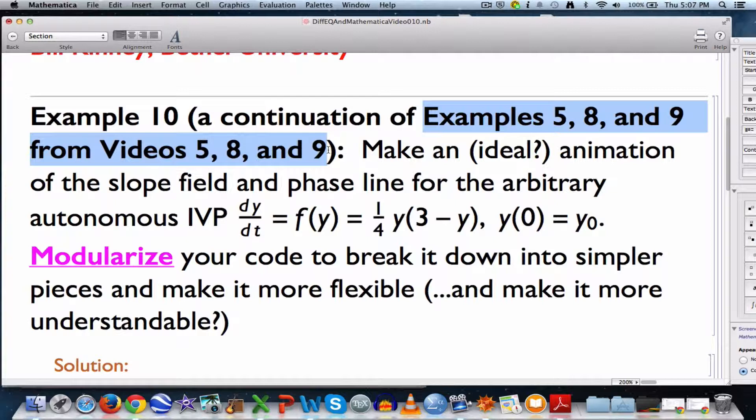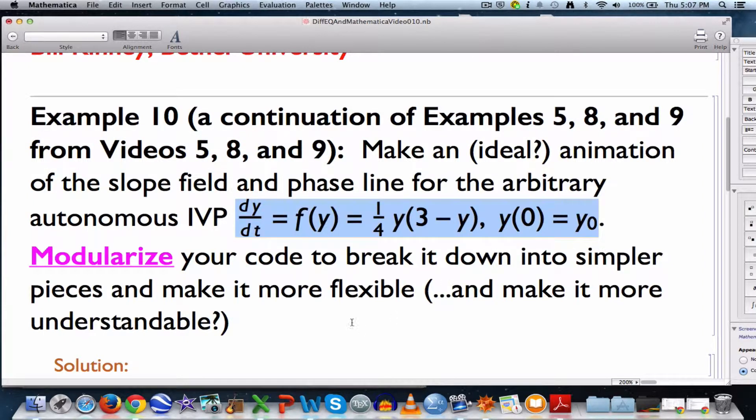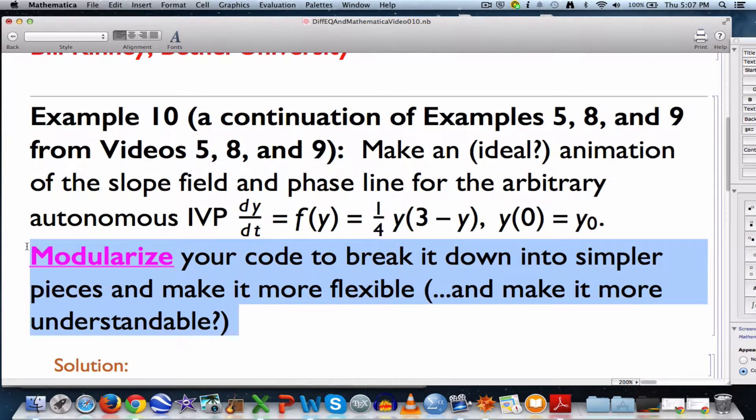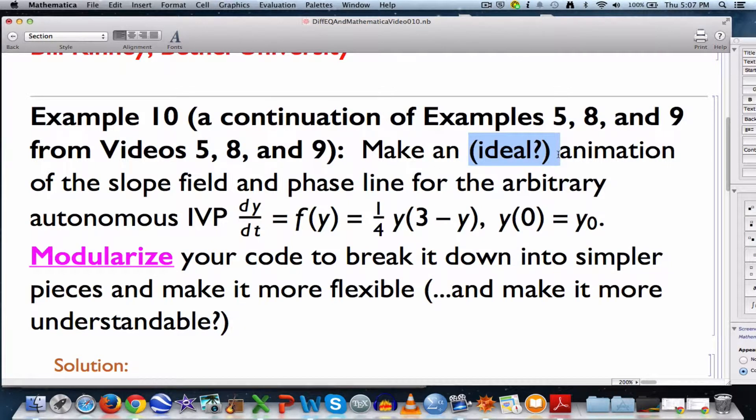Same initial value problem again. Again, we are again modularizing our code to break it down into simpler pieces to certainly make it more flexible to help us consider other examples and hopefully make it more understandable, though again, it's going to be difficult. Is it ideal? Well, I put ideal with a question mark. It's pretty good, but maybe not completely ideal.